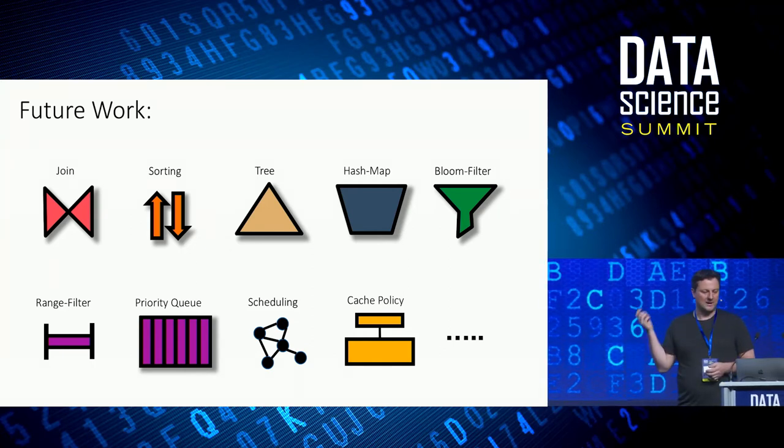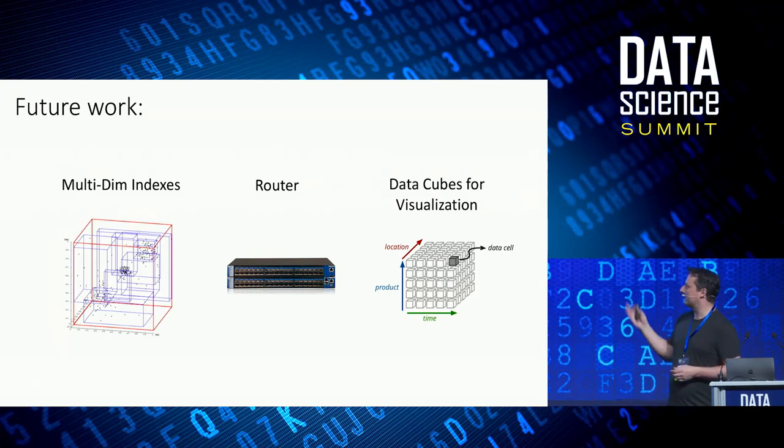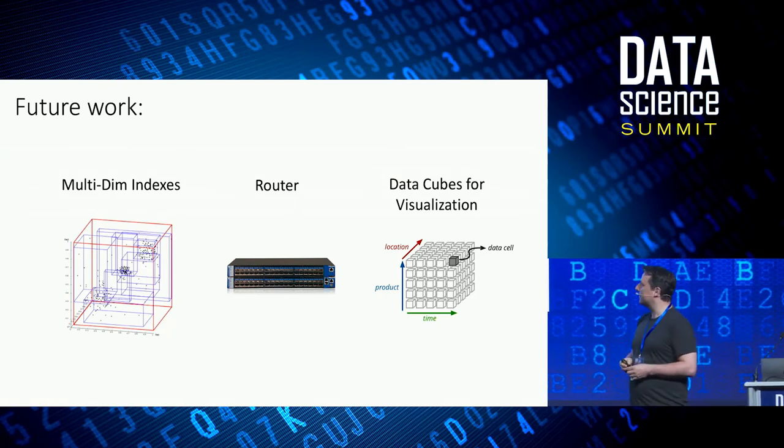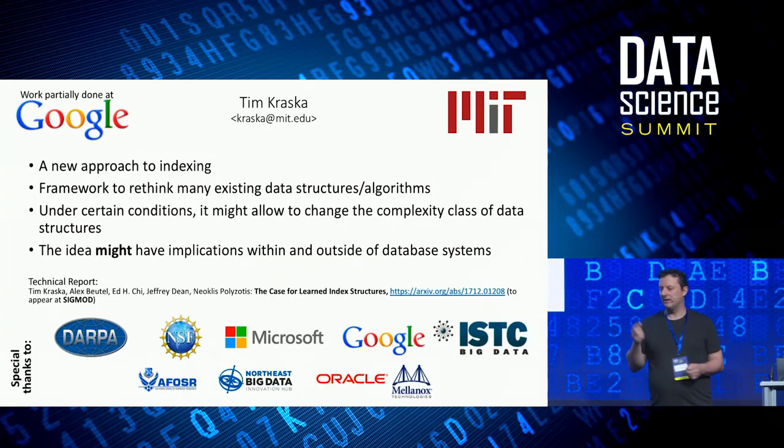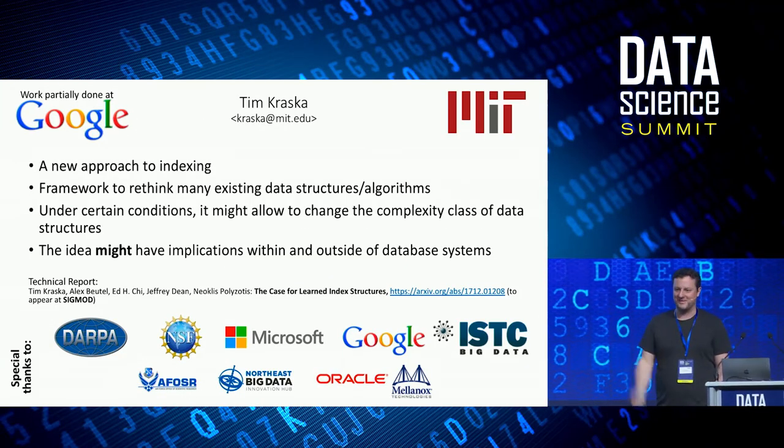There's a lot of interesting work to be done. I think the holy grail is probably multi-dimensional indexes. We saw some work on how we can put it into routers. There are ideas for using the same thing for data visualization. With that, I would like to say thanks, and if you have any questions, I'm happy to take them. Thank you.